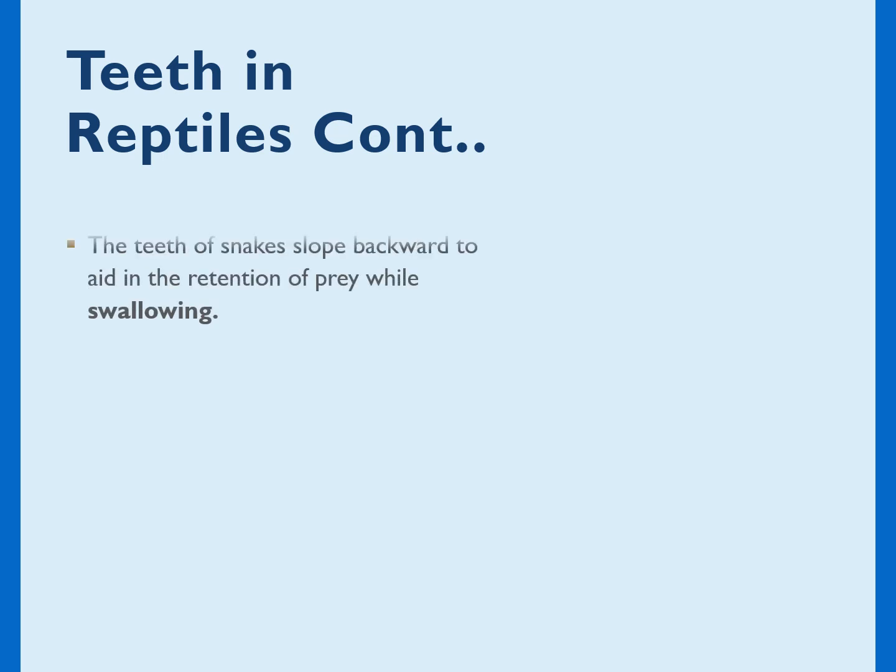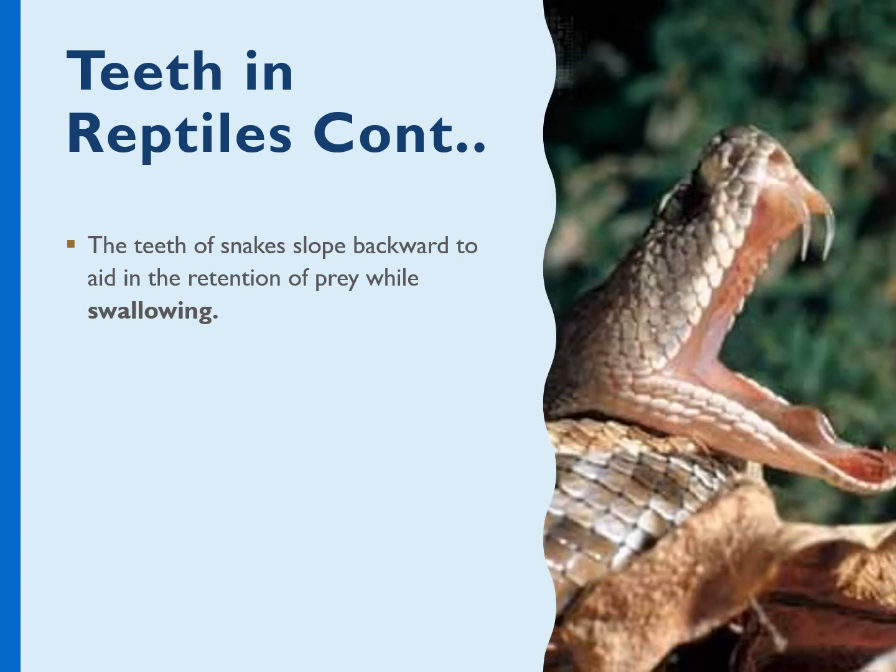Let's talk about snakes' teeth. They slope backward — posteriorly curved teeth — to hold prey as it is worked towards the throat. These backward-curved teeth aid in the retention of prey while swallowing.